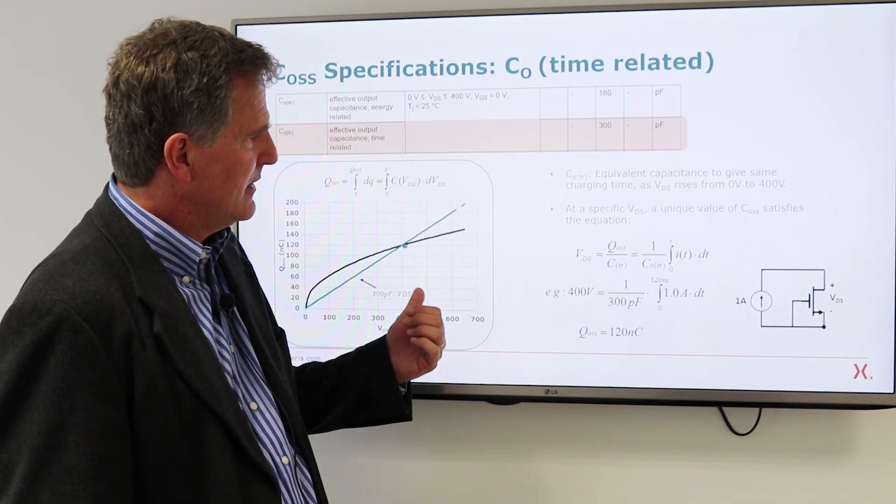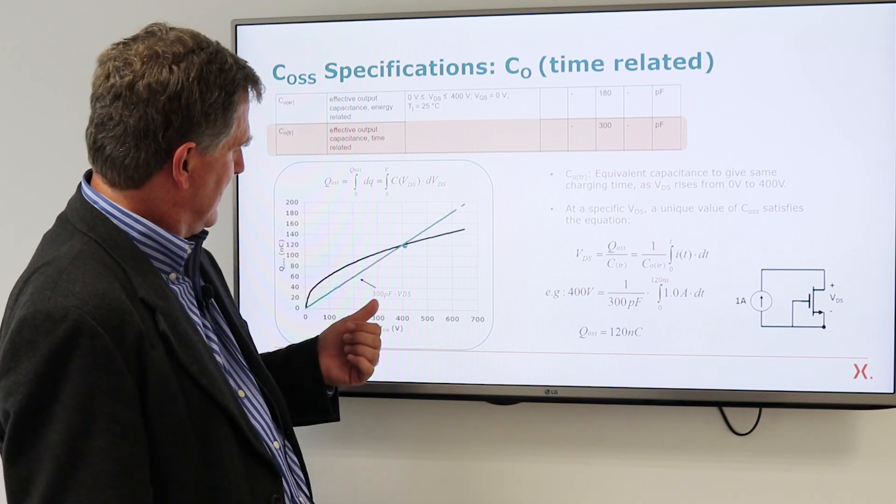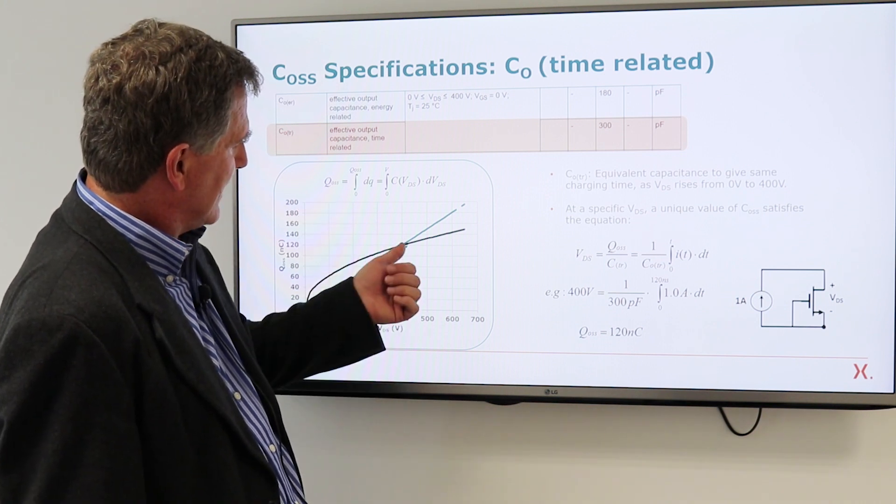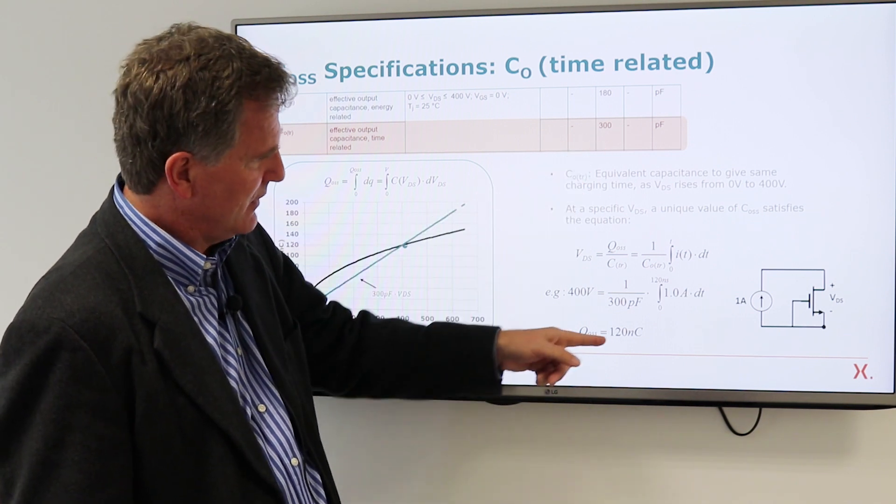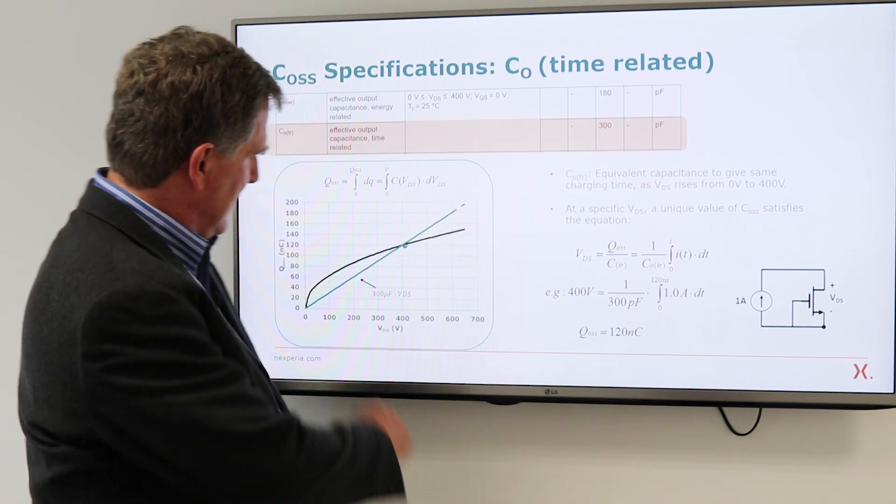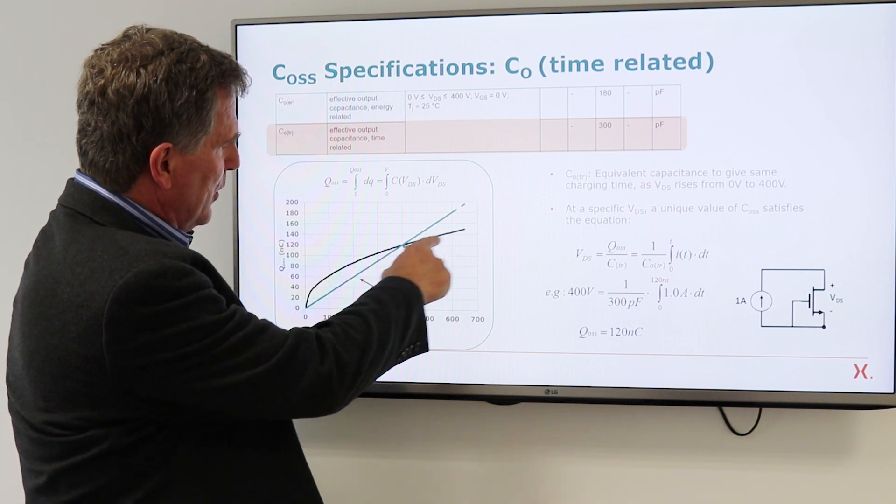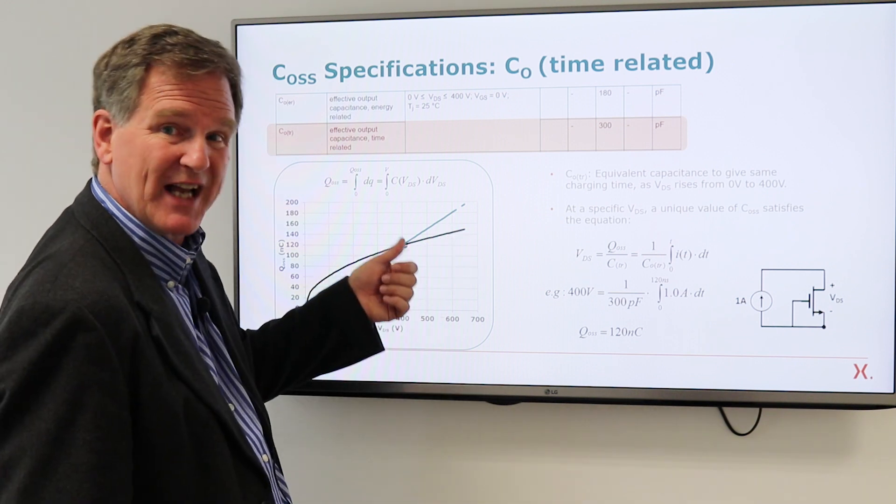Similarly, if you want to know the output charge, at exactly 400 volts, a value of 300 picofarads will predict 120 nanocoulombs, the same as the actual QOSS charge at that voltage.